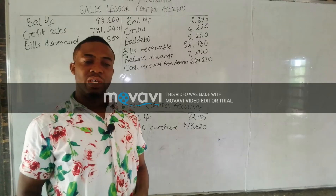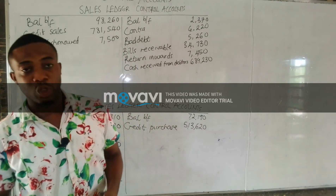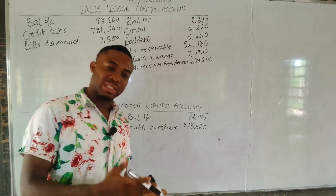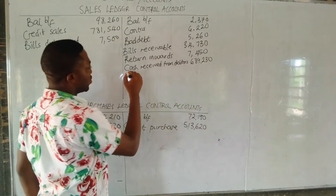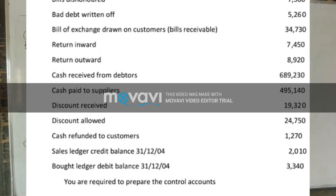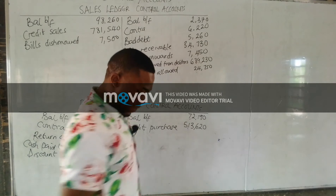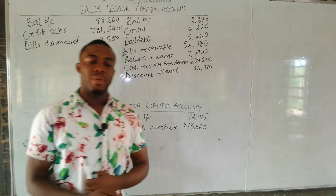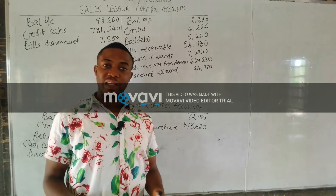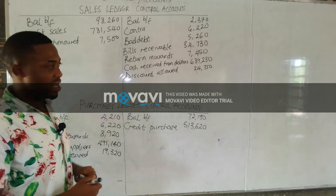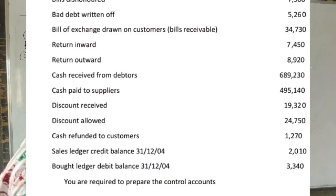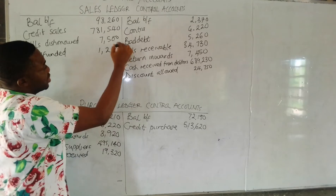Discount allowed is a reduction in the amount to be paid by the customer. Since it reduces the customer's debt, it is posted to the credit side of the sales ledger at $24,750. Next, cash refunded to customer: the customer paid in excess, so cash is refunded back to them — this is posted to the debit side of the sales ledger at $1,270.